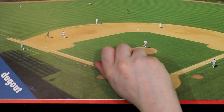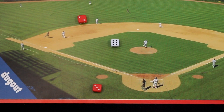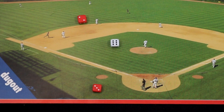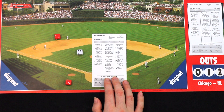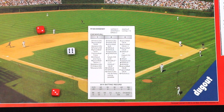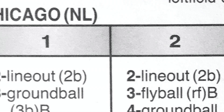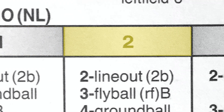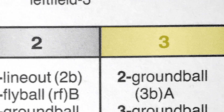For each at-bat, roll the three six-sided dice included. The results of the at-bat are then found on the corresponding player cards. Every batter card contains one, two, and three numbered columns.